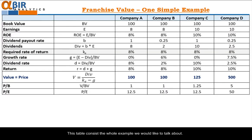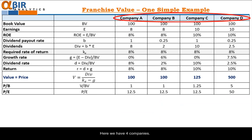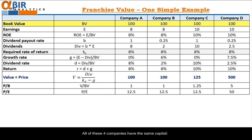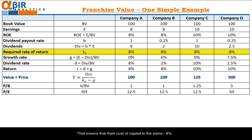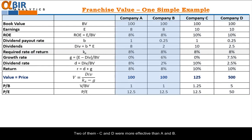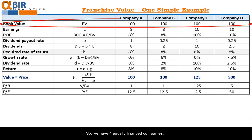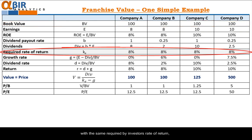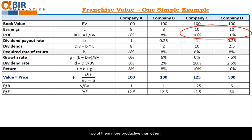This table consists of the whole example we would like to talk about. Here we have four companies. All of these four companies have the same capital — $100 book value. They also have the same required rate of return, meaning their cost of capital is the same: 8%. Two of them, C and D, were more effective than A and B. While A and B provided earnings of $8, companies C and D provided $10. So we have four equally financed companies with the same required rate of return, two of them more productive than the others.